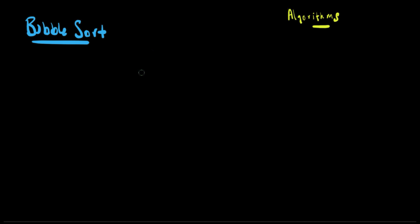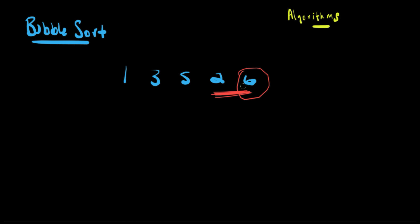Let's get our numbers right here. Let's say one, three, five, two, and six. So how this works is we're going to start all the way over to the right, and then we're going to compare the last two numbers on the right. And if the one on the right is lower than the one on the left, then we switch the two numbers.